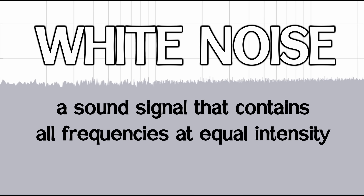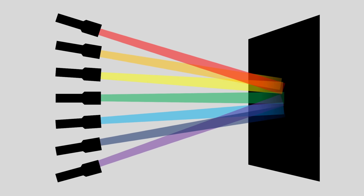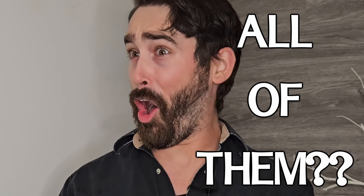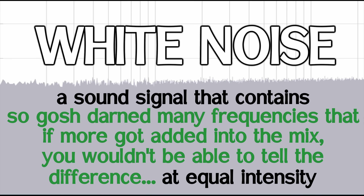I want to start with white noise because it's the most basic, and I think that if you can bake the white bread you can bake all the other kinds of bread. A pretty standard definition of white noise is a sound signal that contains all frequencies at equal intensity. The name white noise comes from a comparison to how white light works, where you mix together all colors or frequencies of light waves. For me it's really the 'all frequencies' part that was giving me the most trouble — thankfully that part of the definition isn't quite right. A better version says 'so gosh darn many frequencies that if more got added into the mix you wouldn't be able to tell the difference.'